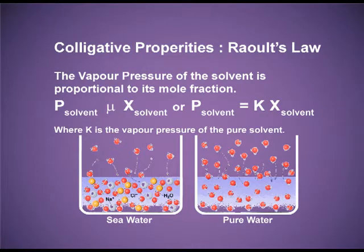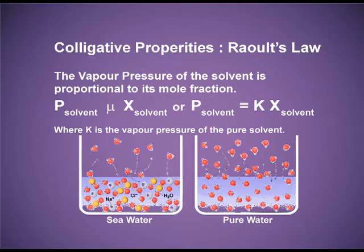Just see this picture. In figure A, you can see sea water, which has many salts. The red balls are water molecules and the yellow and white balls are some salts. Due to these salts, the water molecules are in lesser number on the surface and they are getting little chance to escape, so in the vapour state the number of water molecules is less.